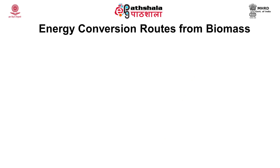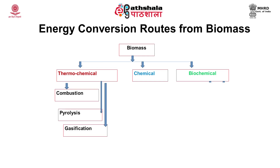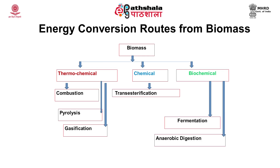Let us look at the energy conversion routes from biomass. There are three different processes: thermochemical processes, chemical processes, and biochemical processes. Thermochemical processes include combustion, pyrolysis, and gasification. Chemical processes include the transesterification process. Biochemical processes include fermentation and anaerobic digestion.